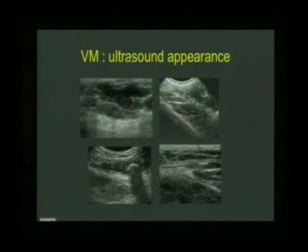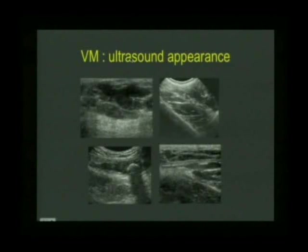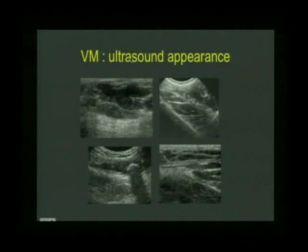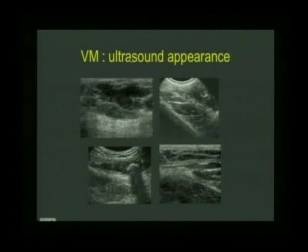Ultrasound is also good. We do not use it for diagnosis with extensive lesions — if it involves the entire leg or the entire arm, we would use MRI. But ultrasound can show little lakes and is extremely useful to guide treatment in interventional radiology. Ultrasound is also very useful when we see children in clinic when we're not sure, and we can make the diagnosis if clinically it's difficult.